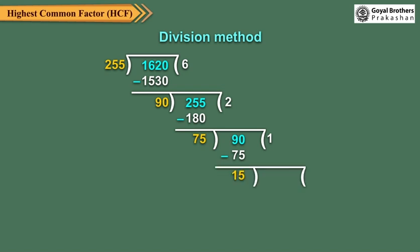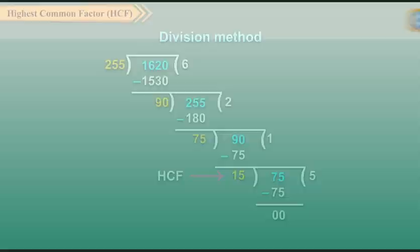Now take remainder 15 as the new divisor and 75 as the new dividend. On dividing, we get 5 as the quotient and 0 as the remainder. So, the last divisor, which is 15, is the required HCF.